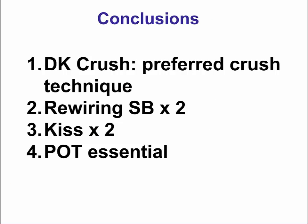In summary, the double KISS CRUSH or DK CRUSH technique is the preferred crush technique currently for performing bifurcation stenting of lesions with less than 70-degree angles. It requires rewiring the side branch twice: first after the side branch stent is crushed, and second after the main vessel stent is deployed. It also requires two KISS procedures, hence the name double KISS. And like every other bifurcation stenting, it's important to perform the POT technique in the proximal part of the stent.